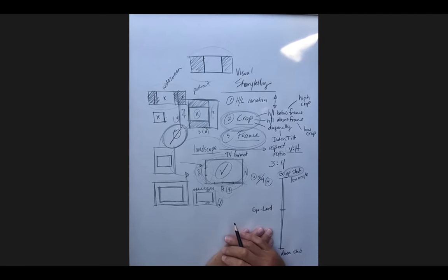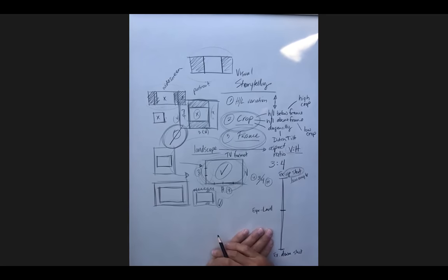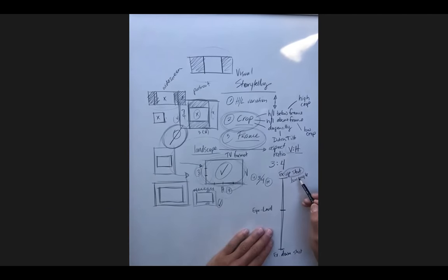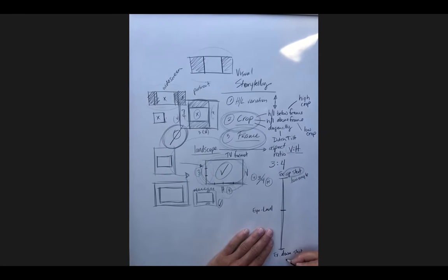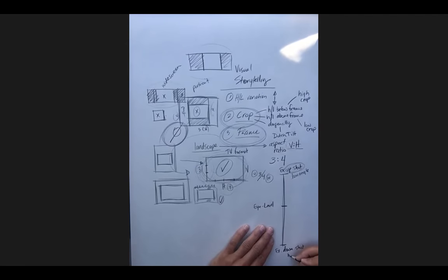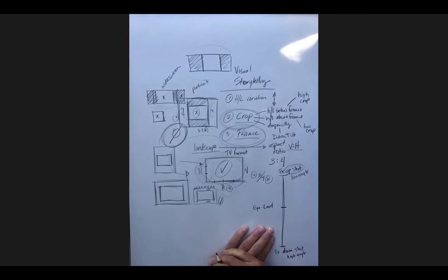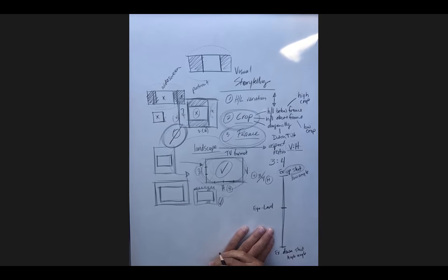Upshots are alternatively referred to as low angle shots, which is confusing — one is a film term, one is an animation term, but they both refer to the same thing. I use 'upshot' because I have a bit of an animation background. When you get into film classes, they'll use 'low angle' and curse my name because you're familiar with this. Upshot means you're looking up at something, or it feels like you're looking up at something. A low angle means the camera or person is in a low position looking up at that thing.